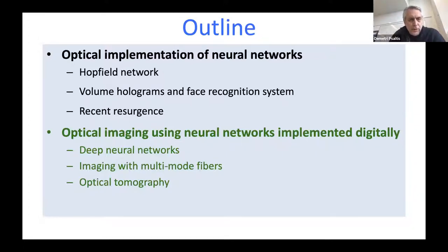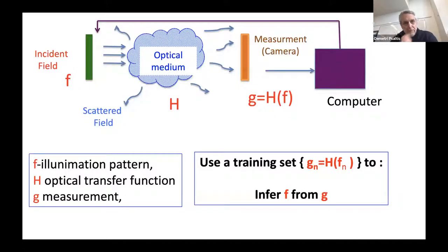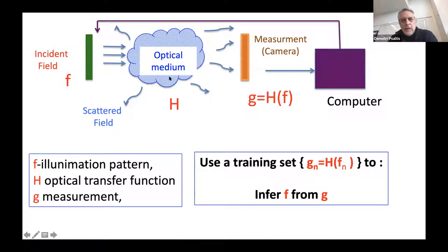For the rest of the talk, he switches gears: not implementing neural networks using optics, but implementing optics with the help of neural networks. The general setup is an optical system with an incident field, possibly with a spatial light modulator, a measurement system with a CCD, and some optical system in between — the idea of computational imaging.